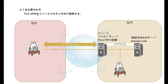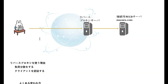そしてもう1つはクライアントの認証ですね。よくある使われ方として、TLS-VPNをリバースプロキシ方式で使用したりしています。イメージとしては、社外からこのリバースプロキシ方式を使ったTLS-VPN装置に向かって通信して、ここで認証するんですね。認証して問題なければ、社内の接続先のウェブサーバーに通信してあげると。こういった用途でリバースプロキシも使われていたりします。